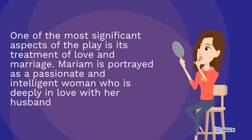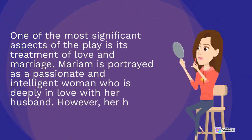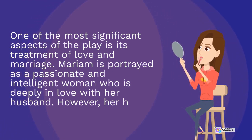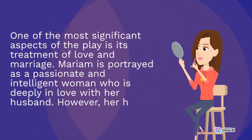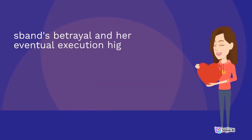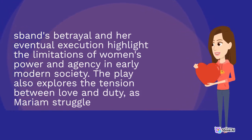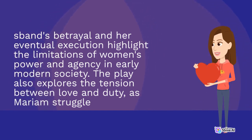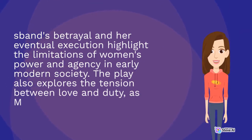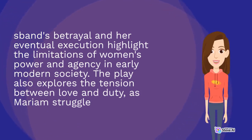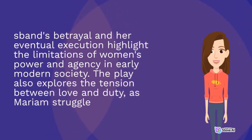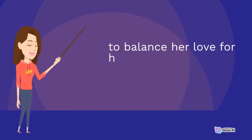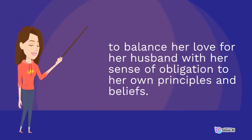One of the most significant aspects of the play is its treatment of love and marriage. Mariam is portrayed as a passionate and intelligent woman who is deeply in love with her husband. However, her husband's betrayal and her eventual execution highlight the limitations of women's power and agency in early modern society. The play also explores the tension between love and duty as Mariam struggles to balance her love for her husband with her sense of obligation to her own principles and beliefs.